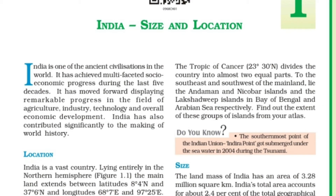There are circles in the north and south called latitudes. The north pole and south pole have exact circles. Longitudes run from the north pole to the south pole, and also across the equator.